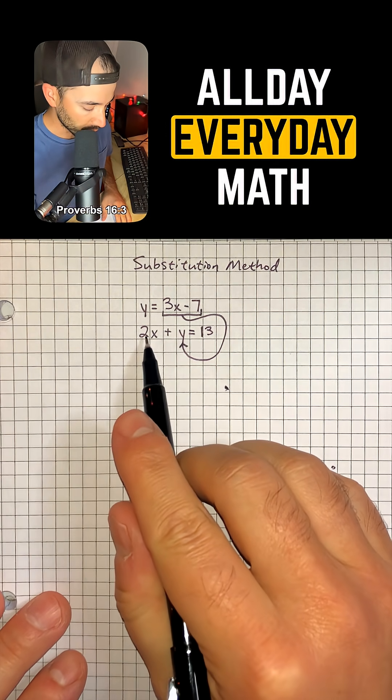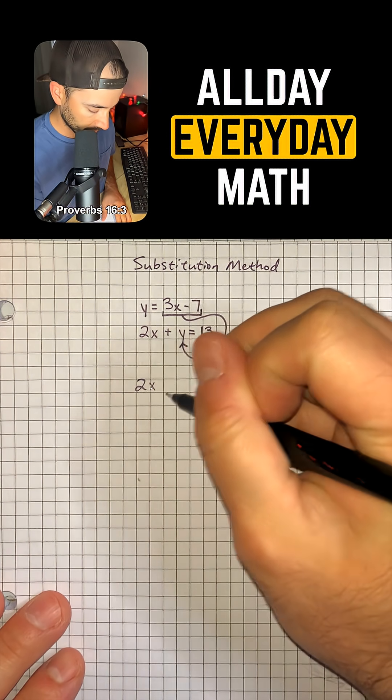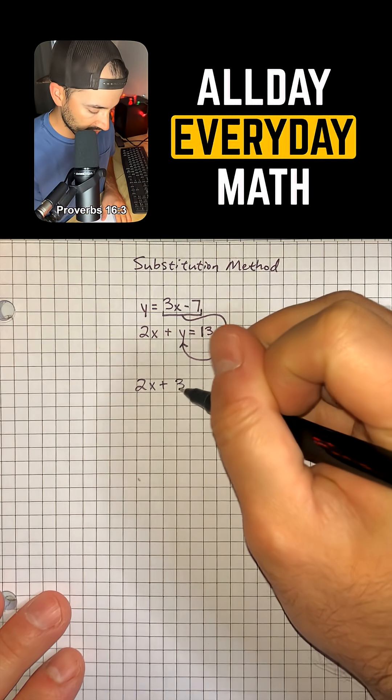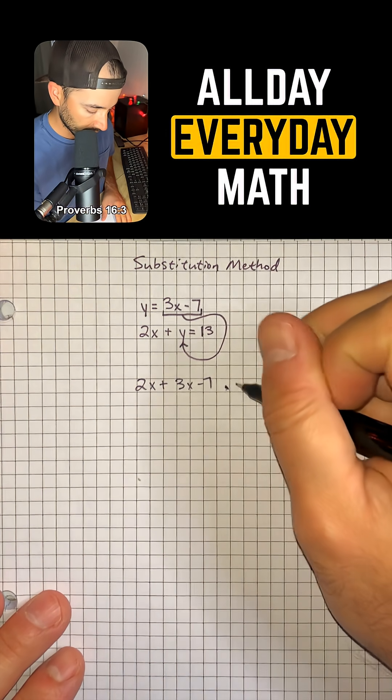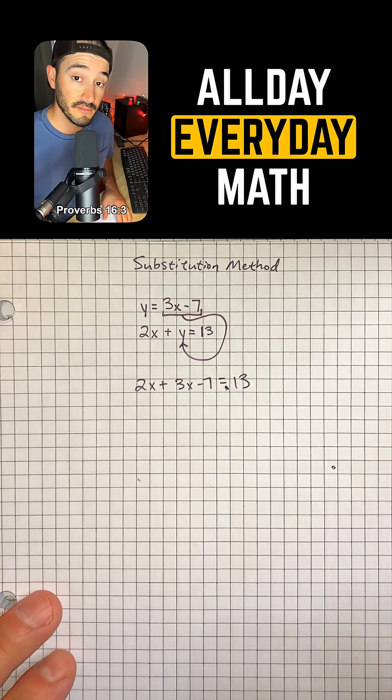So I'm going to rewrite this second equation as 2x plus, now we have 3x minus 7, is equal to 13. And so now we can just solve this like an equation.